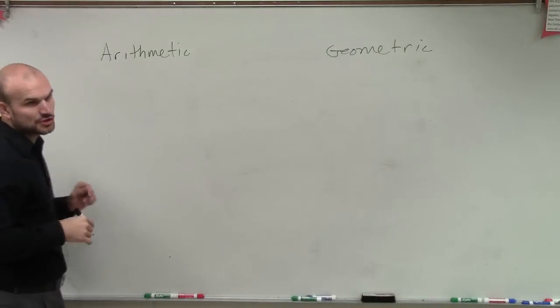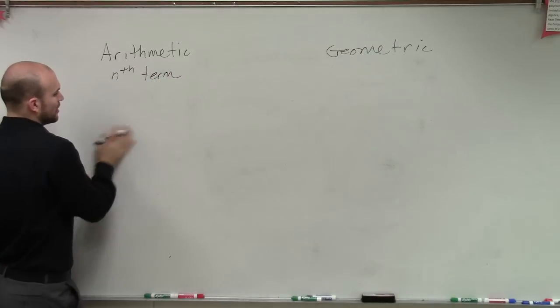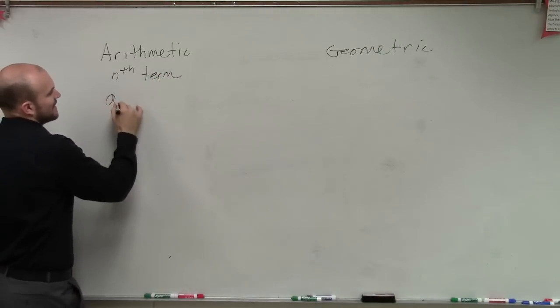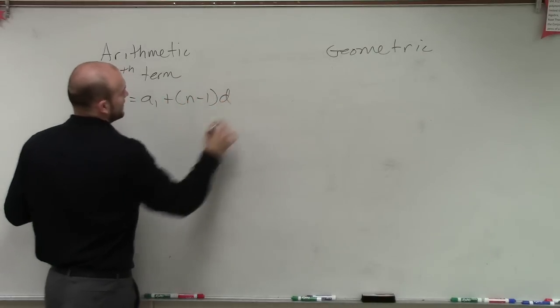So, let's go through the nth term, right? So, if you guys have the nth term for our sequence, then we simply just have a sub n equals a sub 1 plus n minus 1 times d.